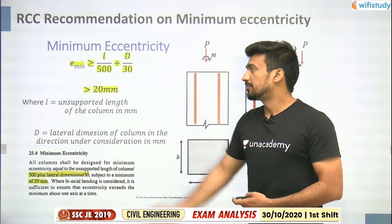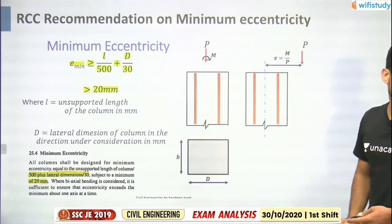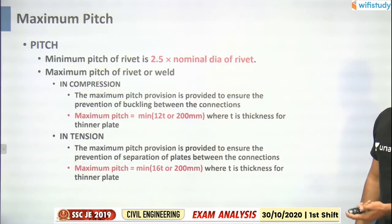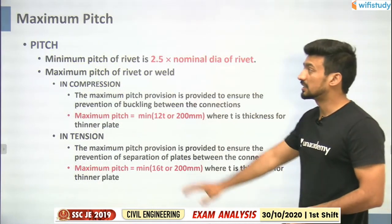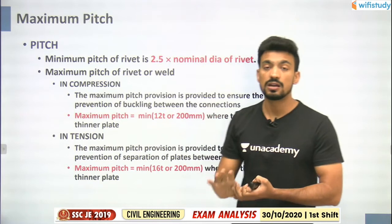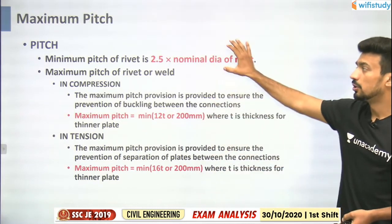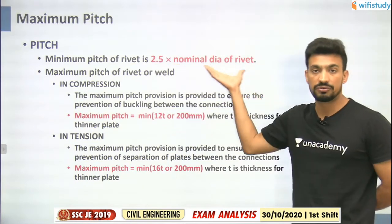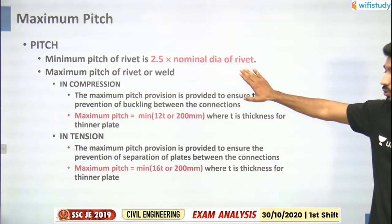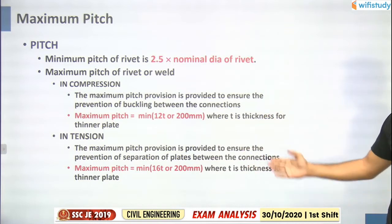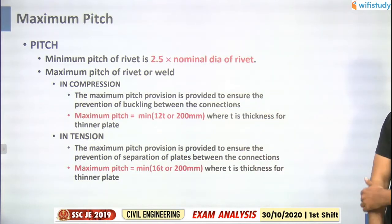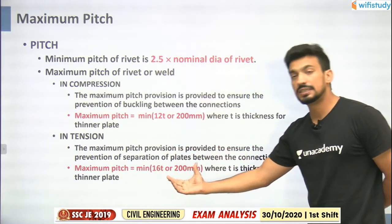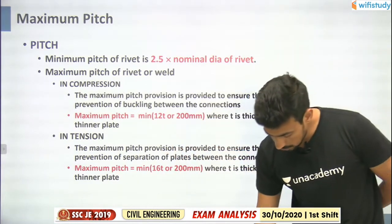Maximum pitch should be L/500 plus D/30 or 20mm. Minimum pitch is 2.5 times the nominal diameter of the rivet. For compression, maximum pitch is 12 times thickness or 200mm (thickness of thinner plate). For tension, maximum pitch is 16T or 200mm.